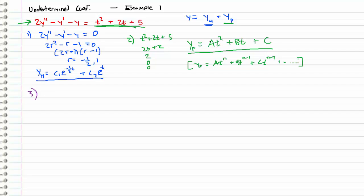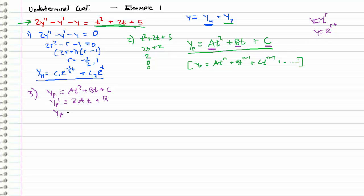So step number three is actually determining the undetermined coefficients. We have our particular solution form, and what we're going to do is differentiate it twice and throw it back into our differential equation, then solve for a, b, and c. This is really no different from how we did the constant coefficient in Euler's equation — there we assumed t to the r or e to the rt as our solution form and differentiated to solve for r. Same idea here. So yp equals a t squared plus bt plus c, yp prime equals 2at plus b, and yp double prime equals 2a.